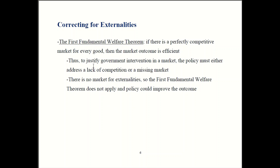To be clear, having perfect competition and markets for every good is just one way the market could be efficient — not the only way. The basic takeaway is that to justify a government policy, you have to show how it fixes a lack of competition or fixes a missing market. Pollution is a missing market, so a policy to address pollution could be justified.